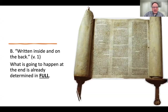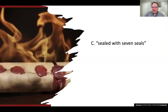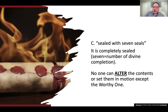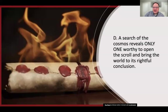What's indicated by the scroll having writing on the front and back is that everything is set, and it will be set in motion when the Lamb opens the seals in chapter 6. Seven is that number of completion, divine completion, throughout scripture. Not only is everything determined in full, no one can alter the contents or set things in motion except the worthy one. There is only one worthy to open the scroll and bring the world to its rightful conclusion.